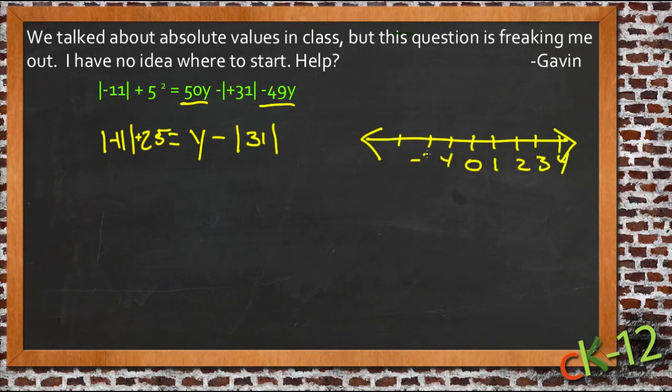The absolute value of a number is just how many steps it is back to zero from that number. So the absolute value of 3, for instance, is 1, 2, 3. It's 3 steps.